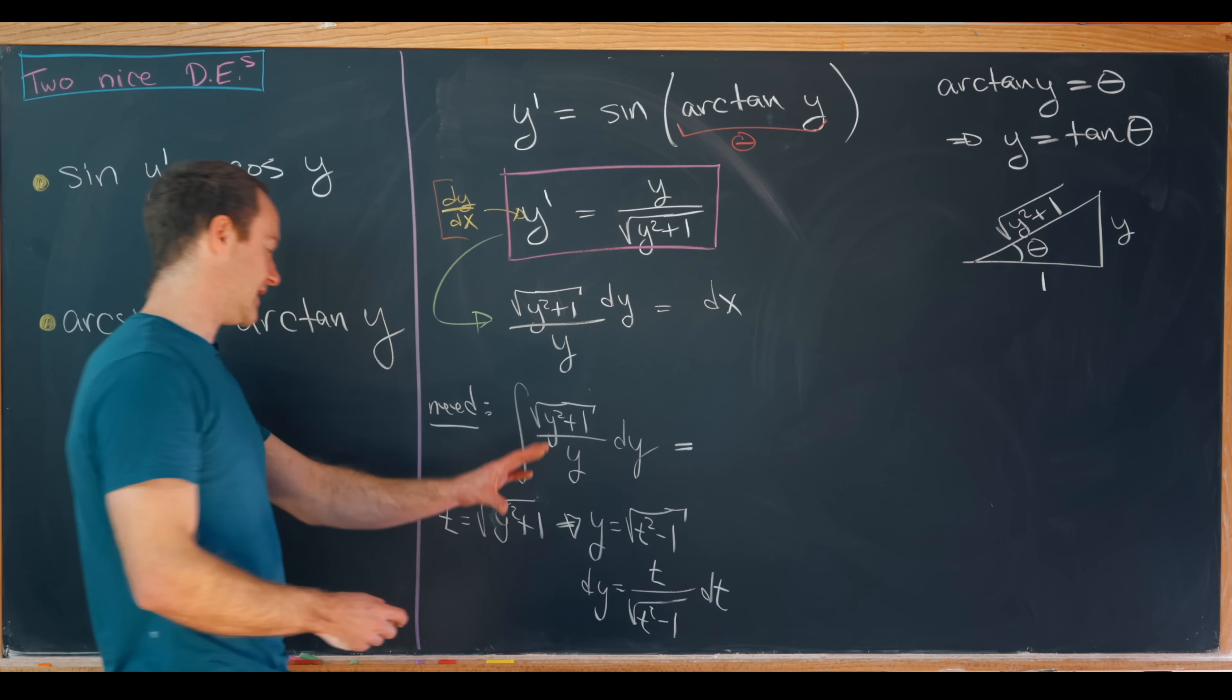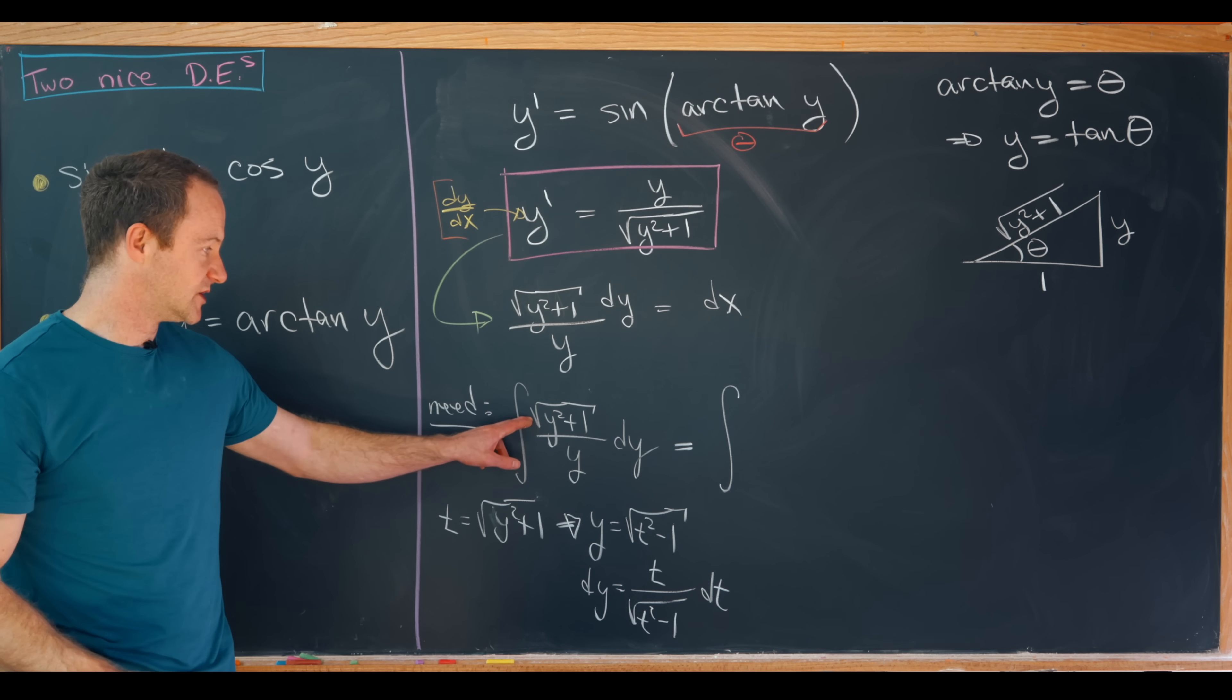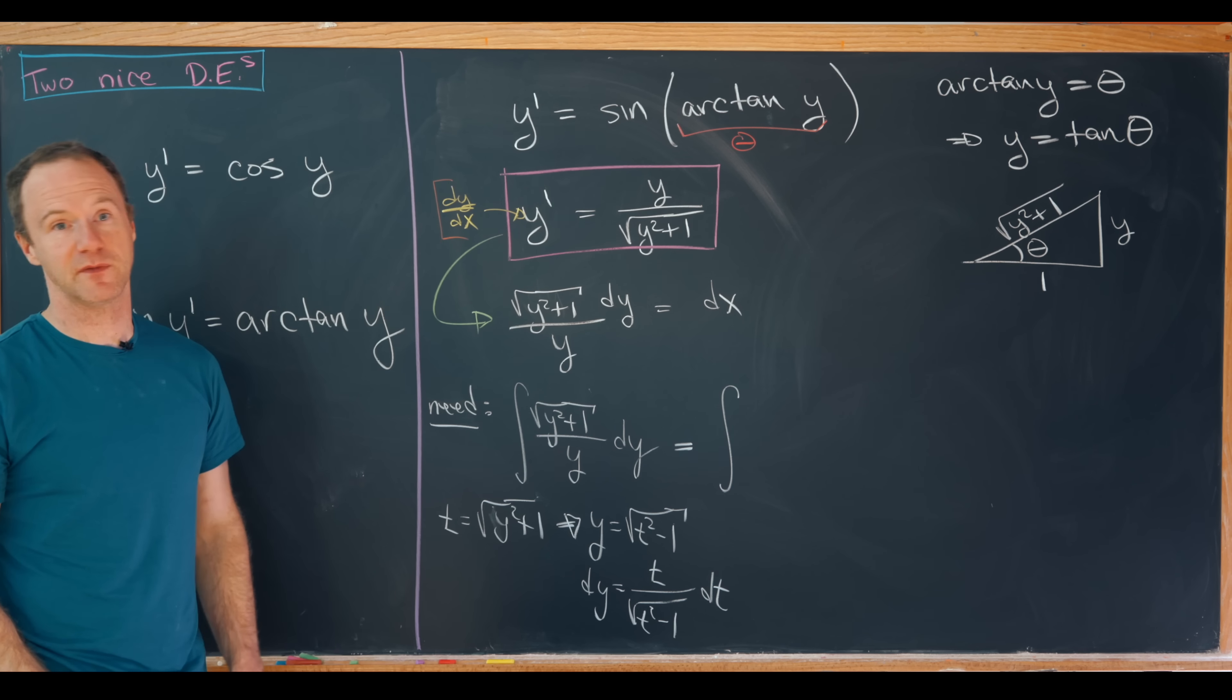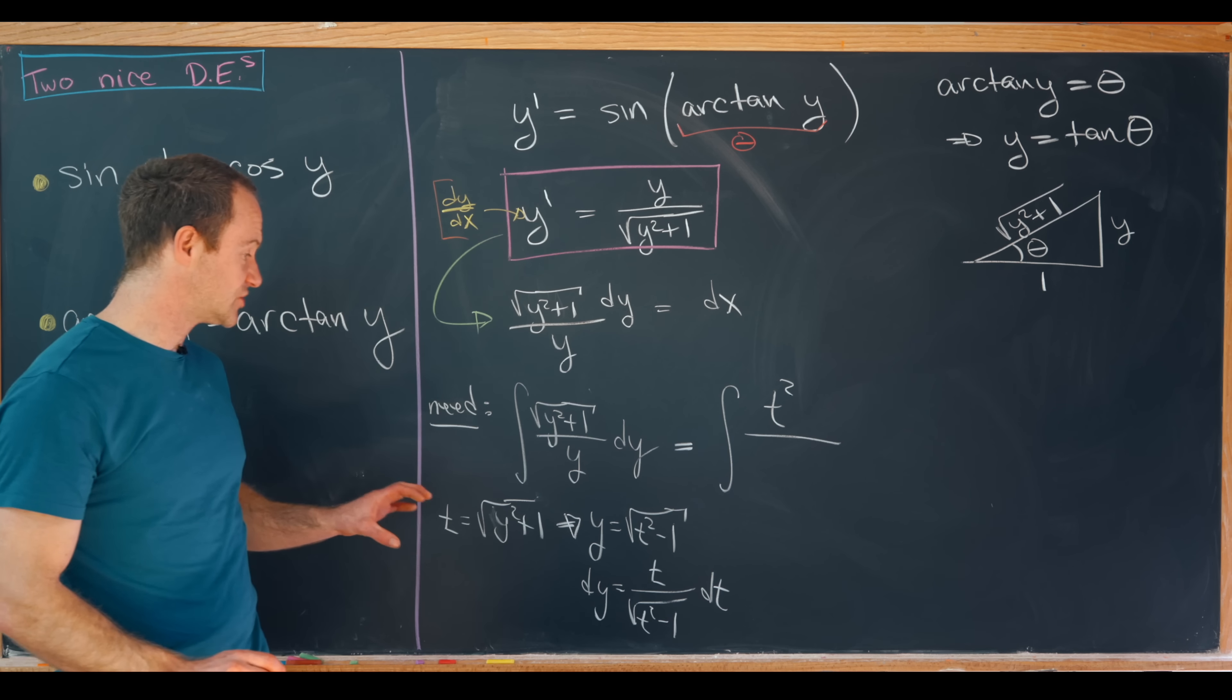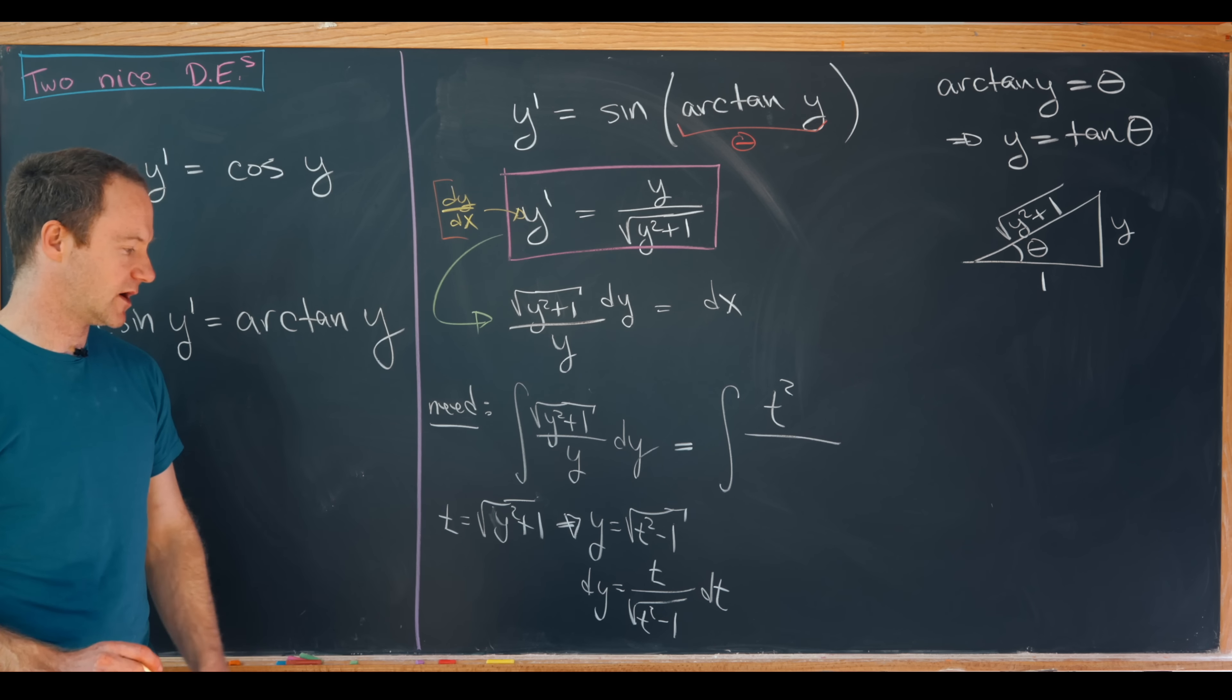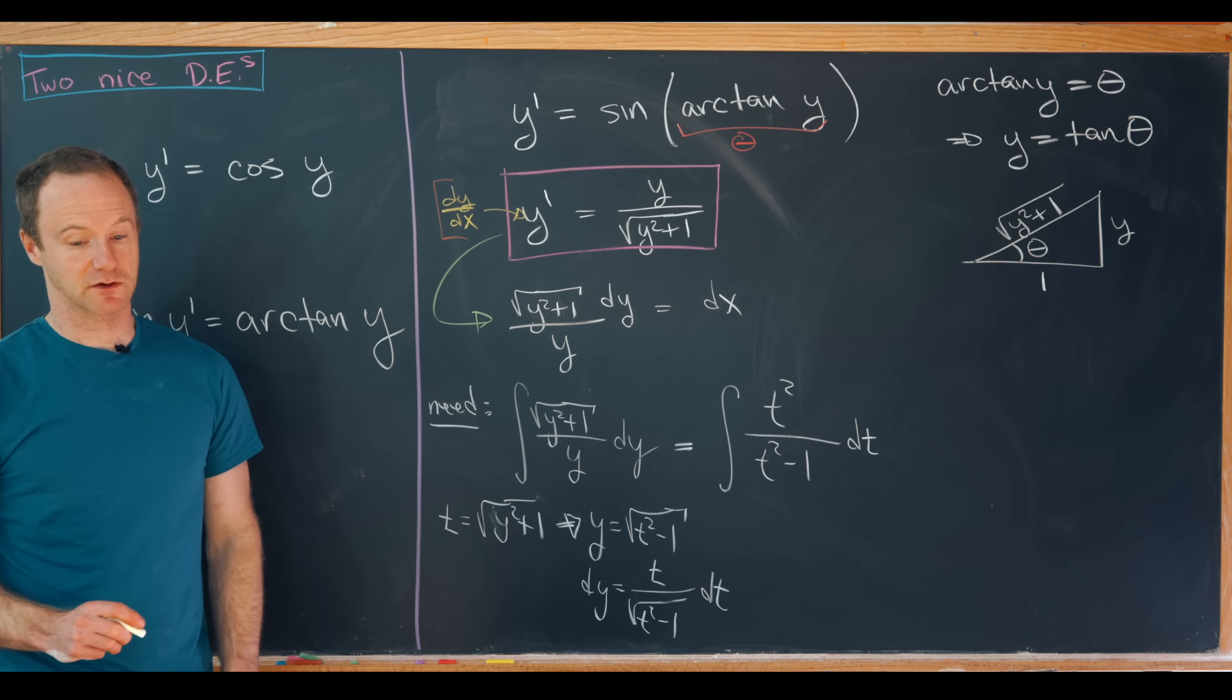Okay so now applying this transformation, we're going to have a t in the numerator from this square root of y squared plus 1. A second t in the numerator from the dy. That gives us a t squared in the numerator. And then in the denominator we've got two copies of the square root of t squared minus 1. Meaning that in the end we have t squared minus 1. So now we need to evaluate that integral.